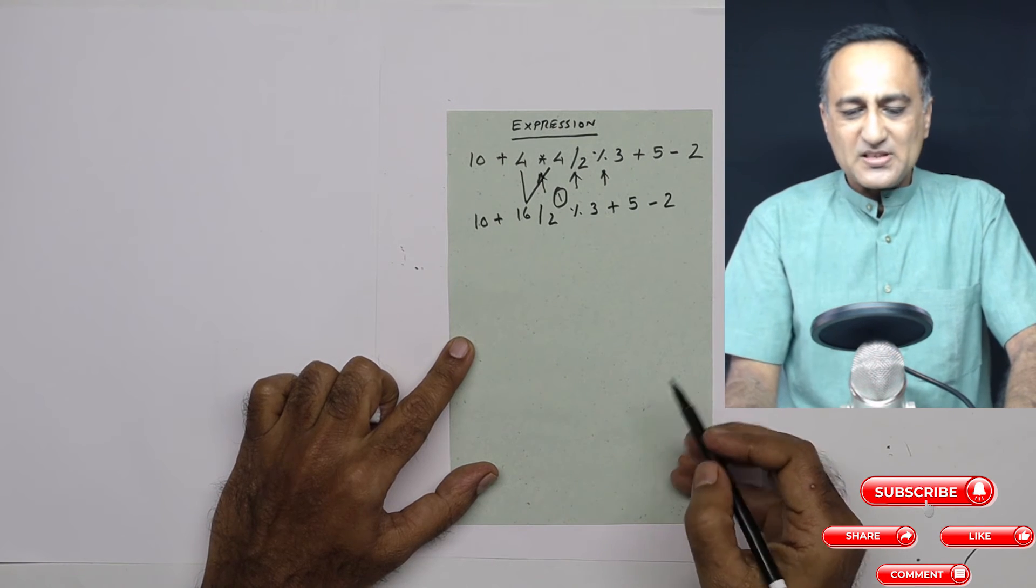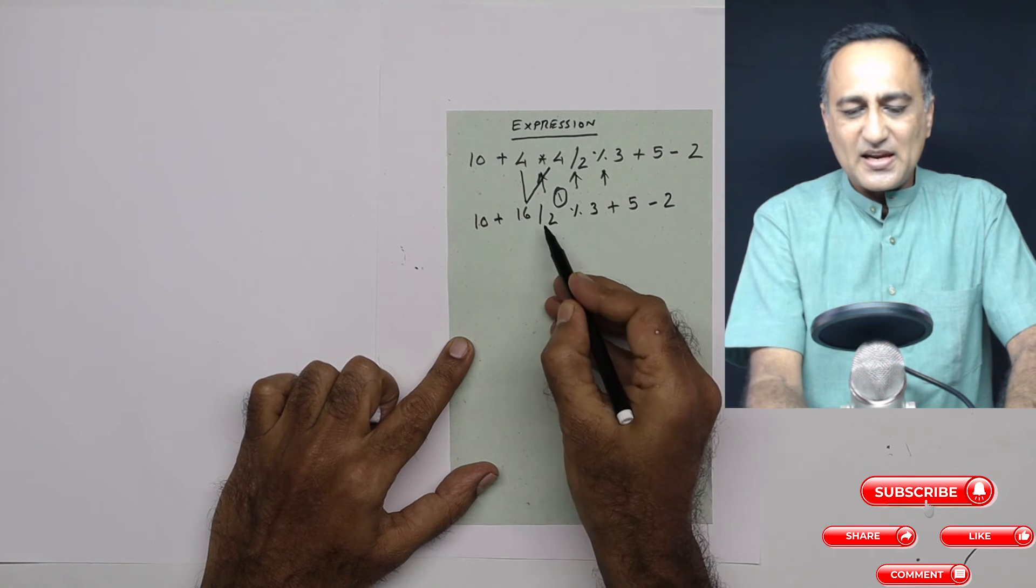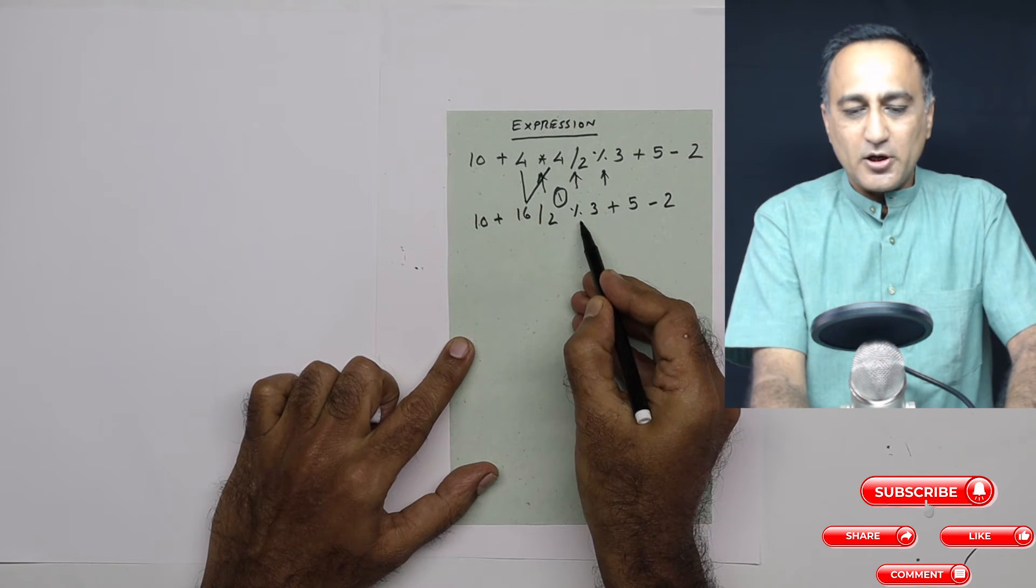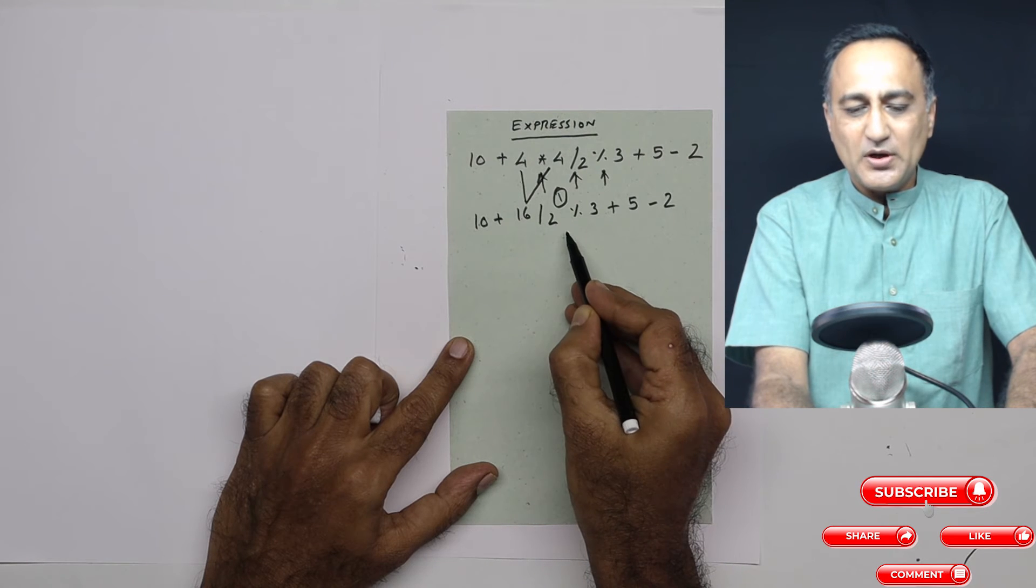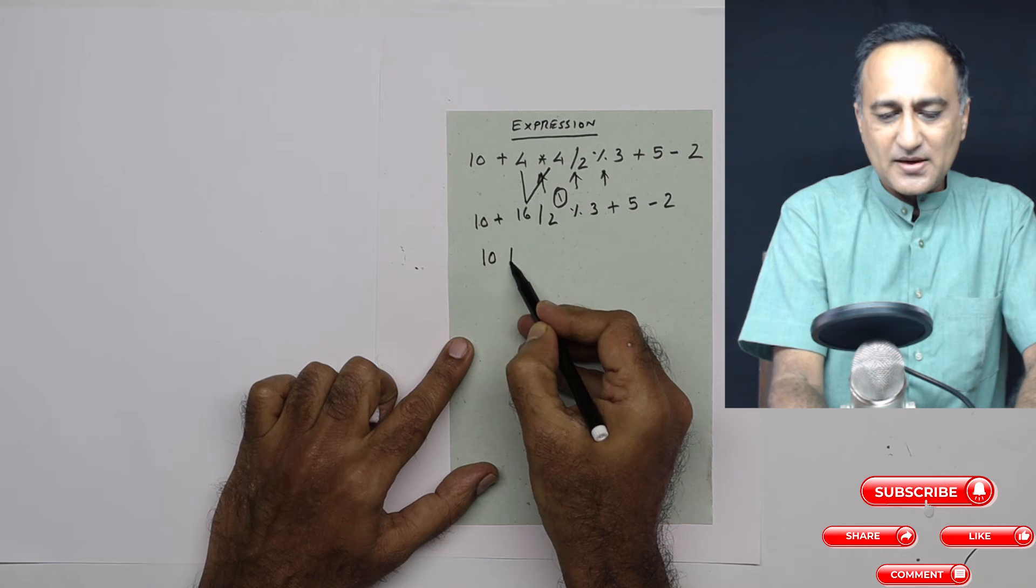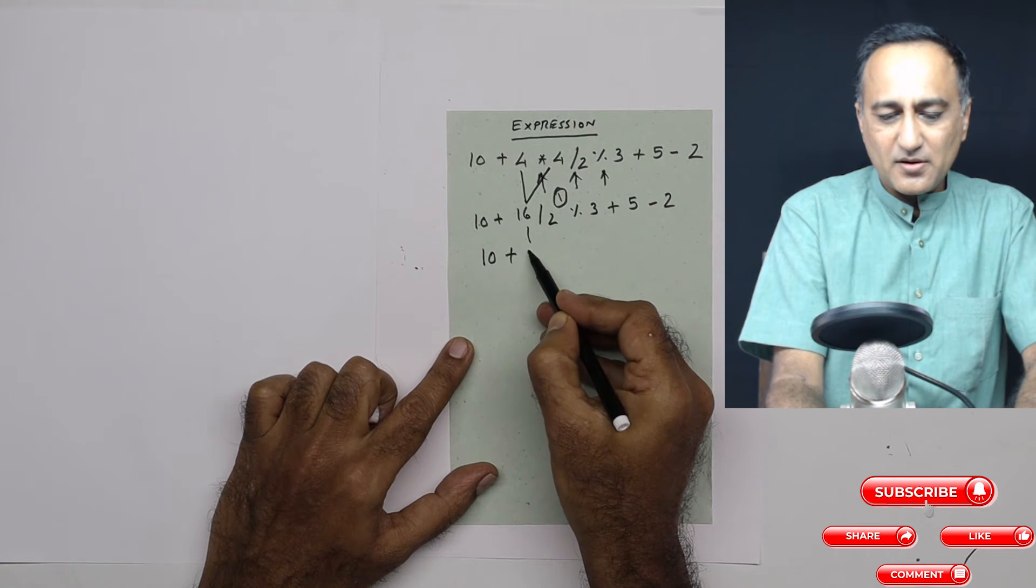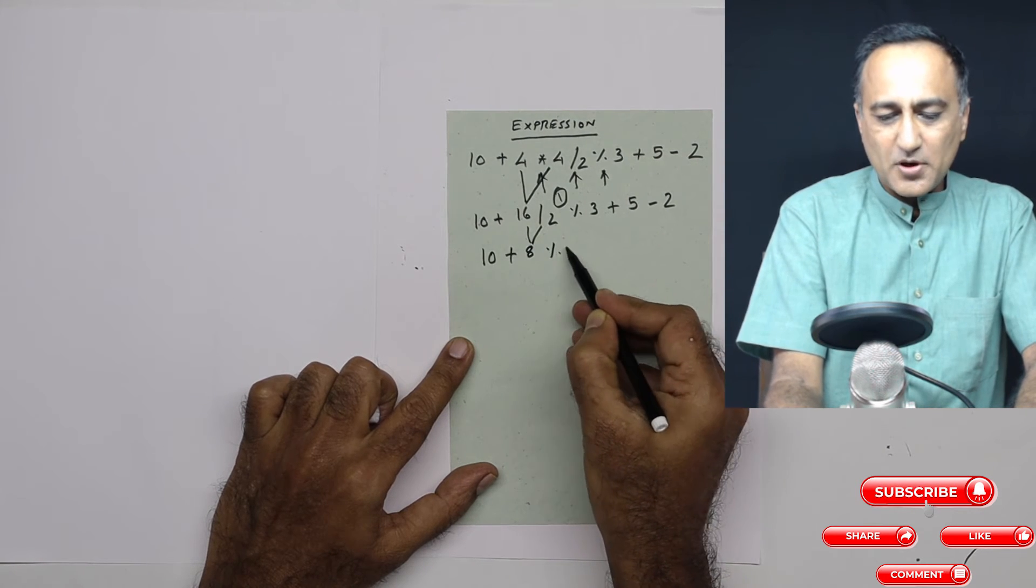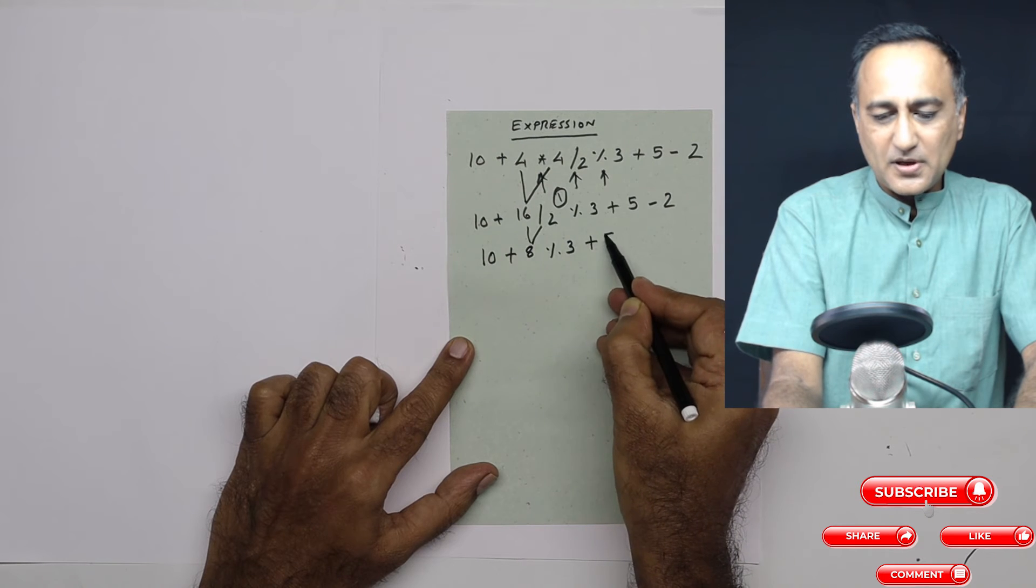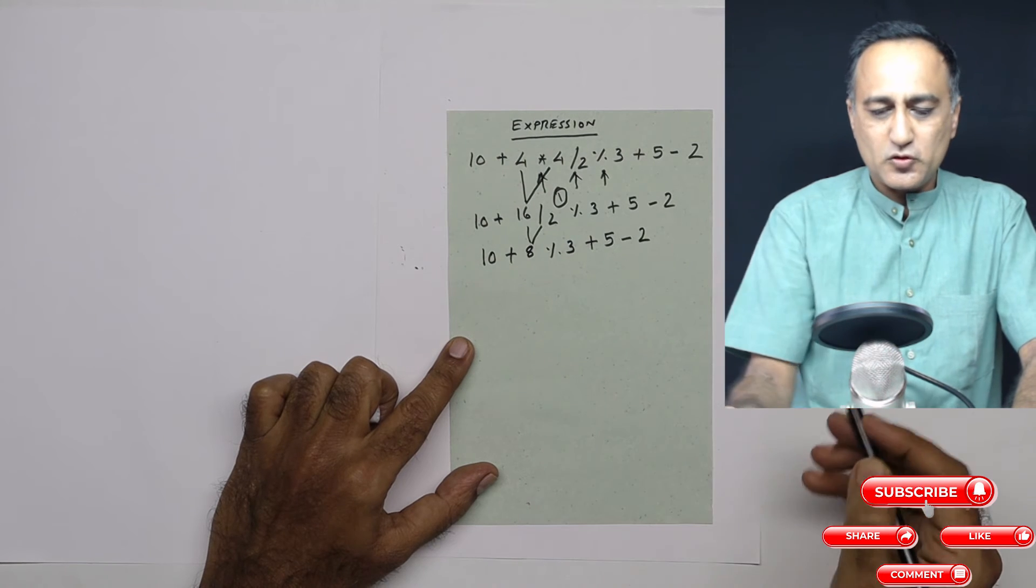Then the next step is I look at this again. I have division and mod. Both have got equal precedence, but division comes first because associativity states left to right. So 16 by 2 is going to be 8. It's 10 plus 8 mod 3 plus 5 minus 2.